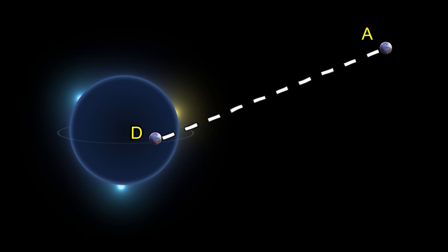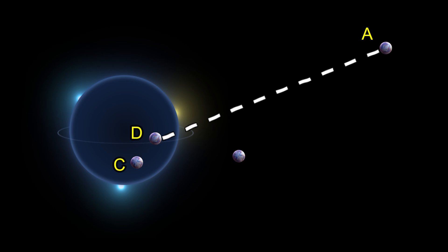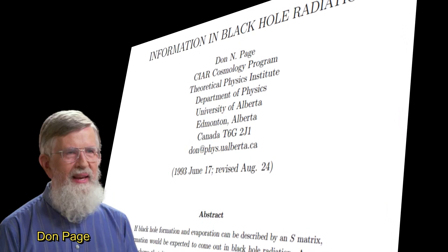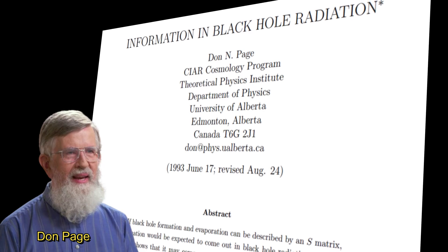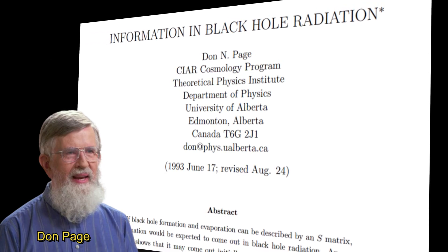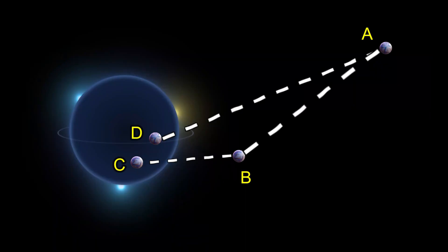The real problem starts when the black hole becomes quite old. Assume there is a second particle-antiparticle pair: one of them goes into the black hole — call it C — and the other starts to go far away — call it B. B is the new Hawking radiation, and A is the old Hawking radiation. Due to the work of Don Page, there are arguments that when a black hole becomes old enough, the old Hawking radiation becomes entangled with the new Hawking radiation — meaning particle B is entangled with both particle A and particle C.